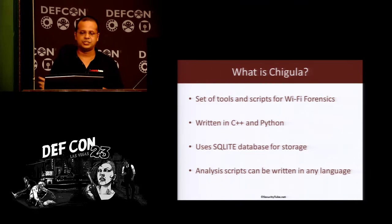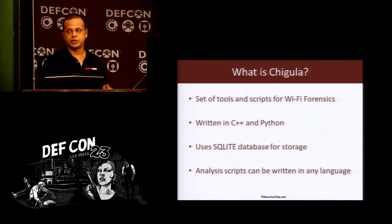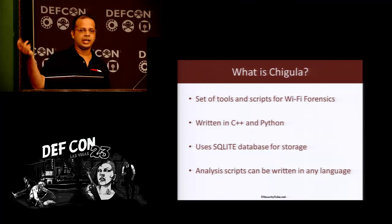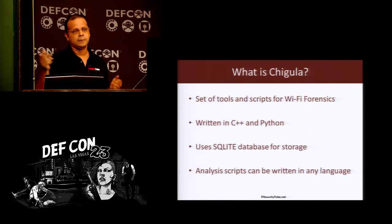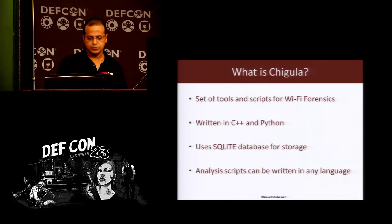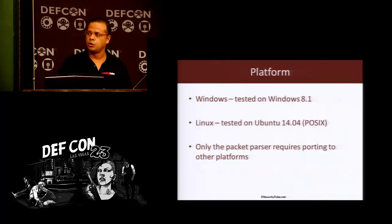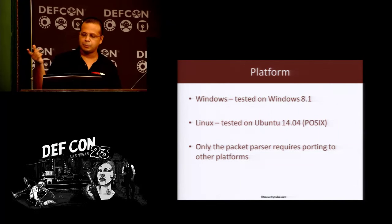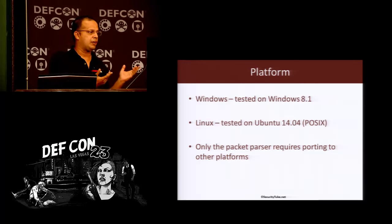So what is Chigula? It's a set of tools and scripts for wireless forensics. The core is written in C++, which handles all the packet parsing and pushing into the database. All the plugins you can write are in Python — actually, you could write plugins in any language which has a SQLite driver. Chigula can work on Windows as well as Linux, or any POSIX system. The packet parser itself could be ported to any platform.